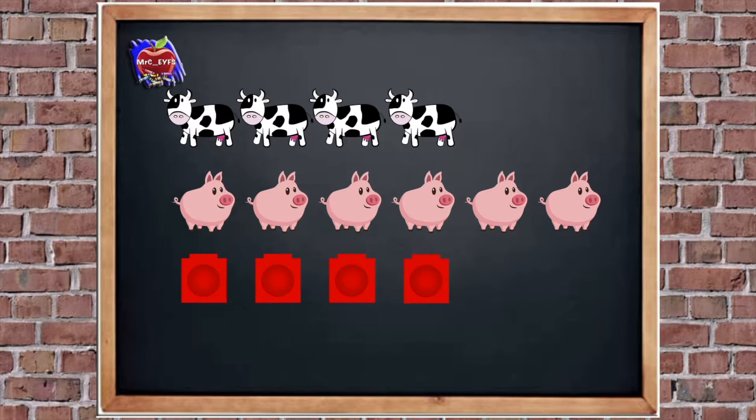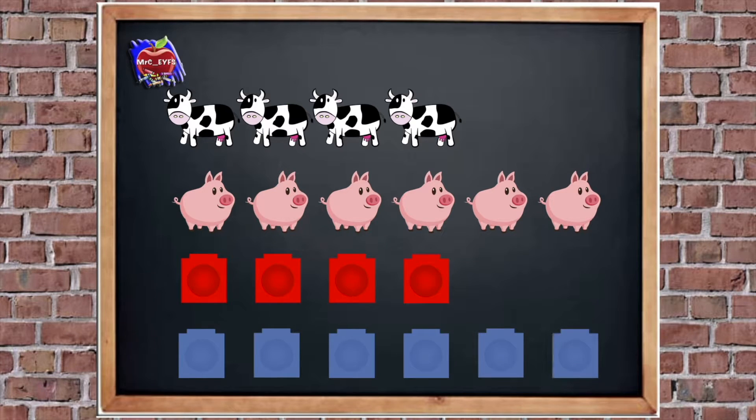And I'm going to use some blue cubes to represent the pigs. How many blue cubes do I need? So how many pigs are there? Yeah, there were six. So let's get our six cubes. Are you ready? So we've got 1, 2, 3, 4, 5, 6.